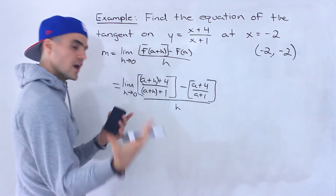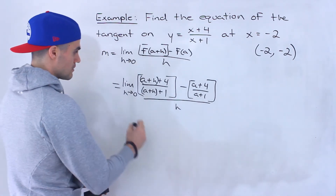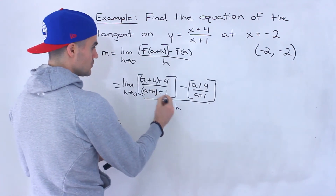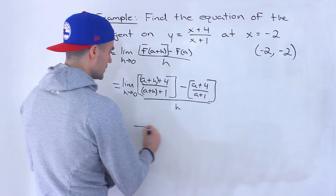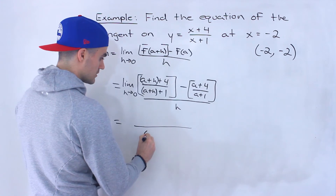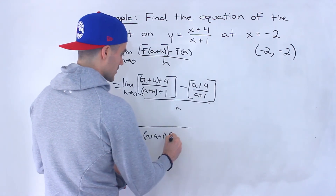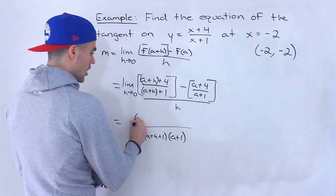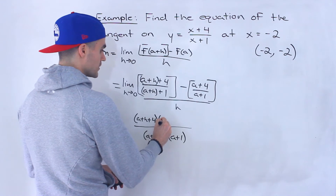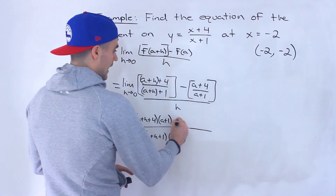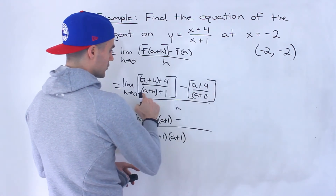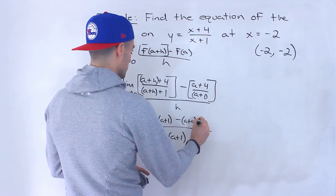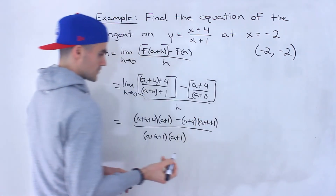Now we want to get rid of this h in the denominator. To do that, I'm going to take these two expressions in the numerator and combine them into one by finding a common denominator. The common denominator between these two expressions is (a + h + 1) times (a + 1). So the first fraction gets multiplied by (a + 1) on top, and the second fraction gets multiplied by (a + h + 1) on top.